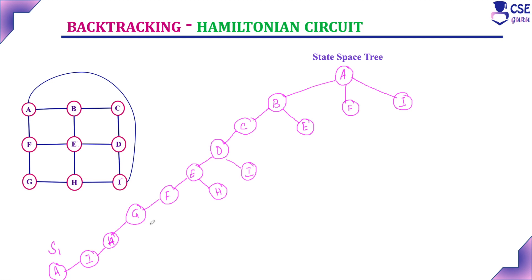Backtrack to the previous levels and check whether one more solution is possible. From H, the unvisited vertices are G and I. From G, considering this path, F is unvisited. From F, the unvisited vertices are E and A, but both are already visited, and I is not visited yet — but from F, we cannot reach I. So this will be considered a dead end. Next, H to I: from I, D and H are both already visited, so this is also a dead end.